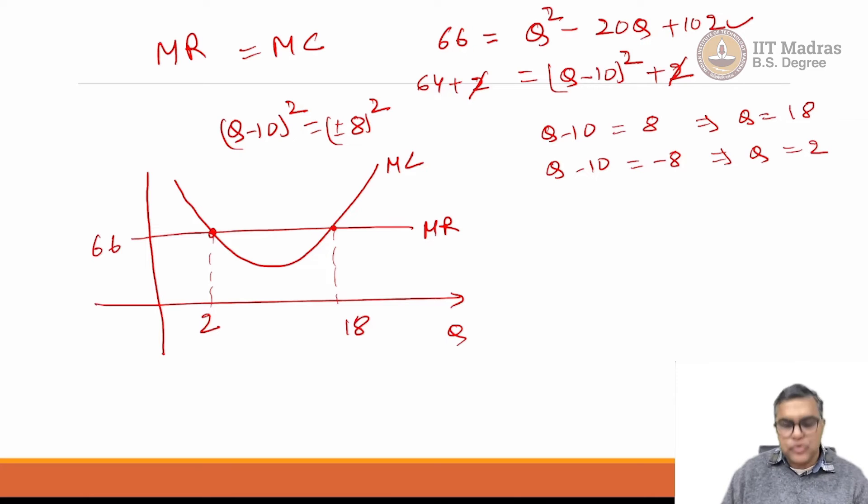Now, which one should the firm produce? We talked about that optimal level where MR is equal to MC, but at both these points MR is equal to MC. Should the firm produce 2 units only or 18 units only? Again, it is time for you to pause and think about which is a better option for the firm.